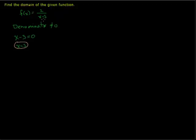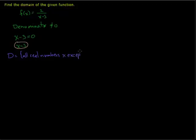So our domain must include all the real numbers except this value of 3. One way to write that is: the domain is the set of all real numbers x, except 3. So it's all real numbers except 3.